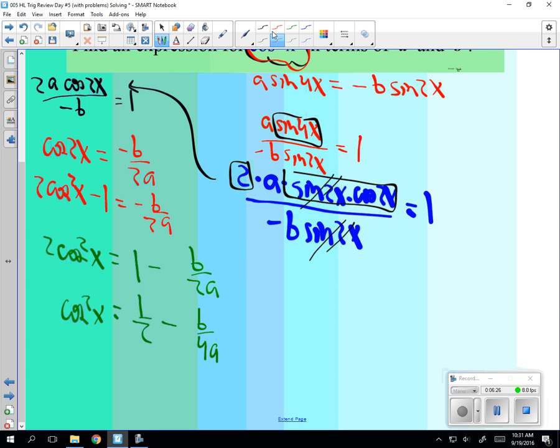Now, some people like to get a common denominator. How many of you have this for an answer? Great. That's fine. I think it's great. If you wanted to get a common denominator, you're going to get 2a minus b over 4a. How many got that?